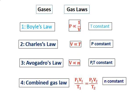This video focuses on Charles law, Avogadro's law, and combined gas law. Boyle's law was covered in the previous video. Charles law states that at constant pressure, volume is directly proportional to temperature. Avogadro's law states that when pressure and temperature are constant, volume is proportional to the number of moles. The combined gas law combines Boyle's and Charles law: P1V1/T1 = P2V2/T2, where n is constant.